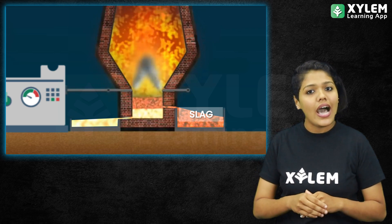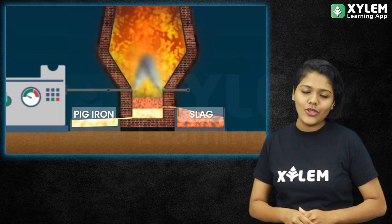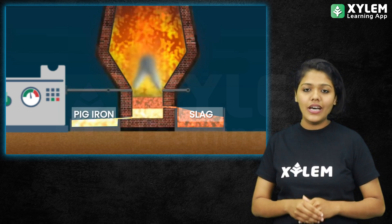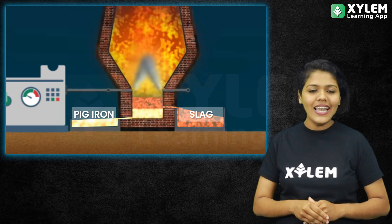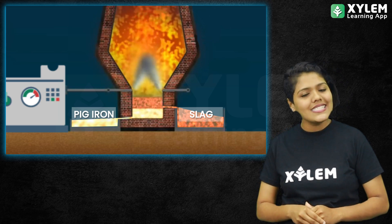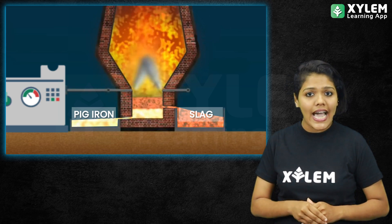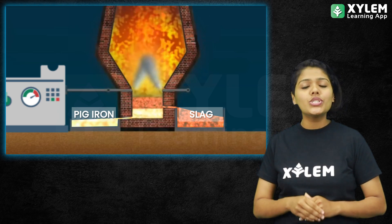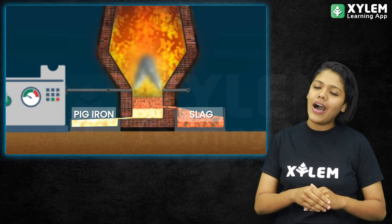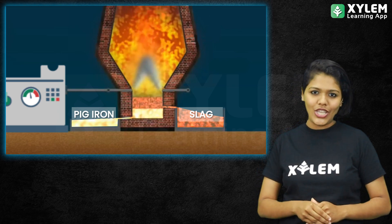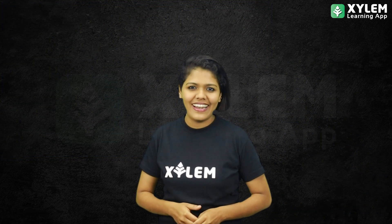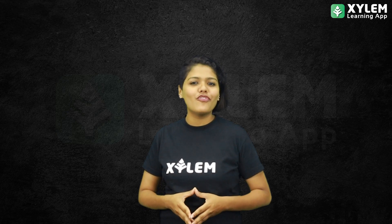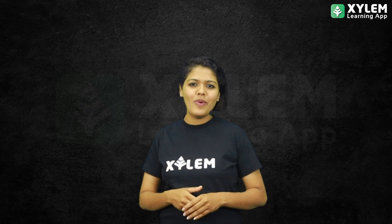In this case, the iron is called pig iron. When we further process the iron, we get cast iron, and from cast iron we get wrought iron. So, the extraction of iron is very important.